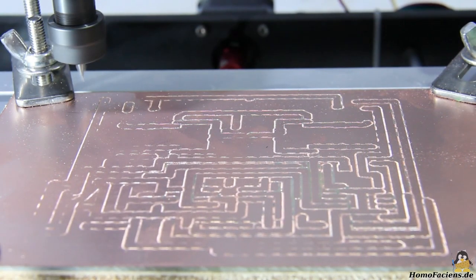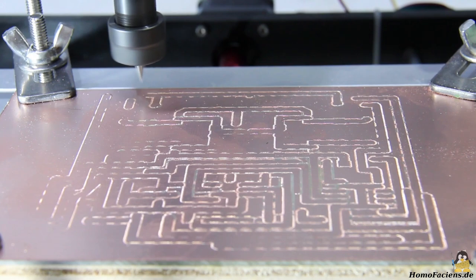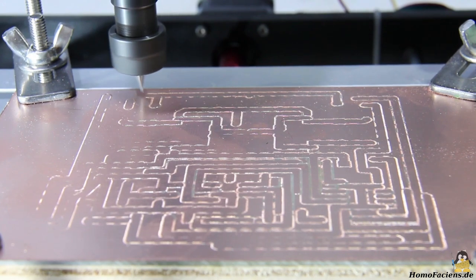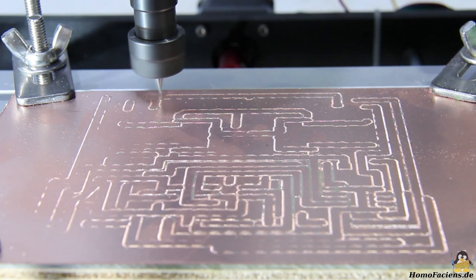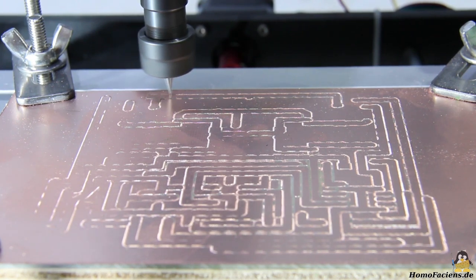After the first pass, the tracks are not yet isolated from the rest of the copper coating. After each pass, the script asks whether the file should be processed again with the cutter being lowered a bit more.